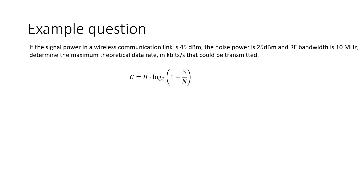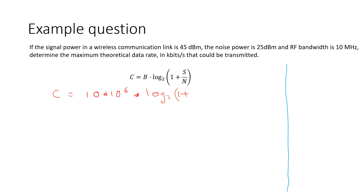Now let's look at a second example where the data is presented slightly differently. If the signal power in a wireless communications link is 45 dBm, the noise power is 25 dBm, and the RF bandwidth is 10 megahertz, determine the maximum theoretical data rate in kilobits per second. The bandwidth is 10 × 10^6, multiplied by log base 2 of (1 + signal-to-noise ratio). Since we're given signal and noise power separately, we need to do a quick calculation.